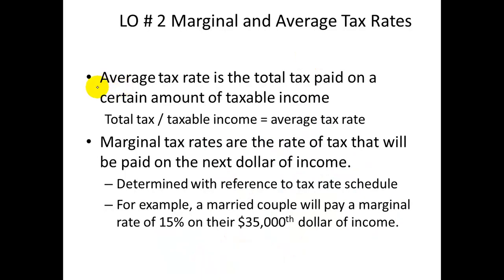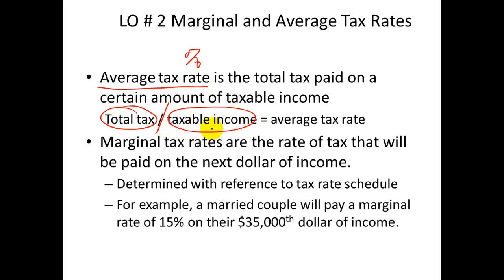To calculate the average tax rate, the rate is going to be a percentage. You get the total tax for the whole year — you've already figured out the taxes — and you divide that by the tax base, which is your taxable income for the year. You'll probably get a decimal, which you convert to a percentage to get your average tax rate. Average tax rates are not used to calculate the tax; you first have to calculate the tax, then you can calculate the average rate.